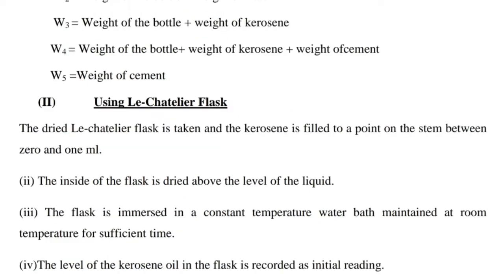Procedure using the Le Chatelier flask: The dried flask is taken and kerosene is filled to a point on the stem between 0 and 1 ml. Next, the inside of the flask is dried above the level of the liquid. Next, the flask is immersed in a constant temperature water bath maintained at room temperature for sufficient time. The level of the kerosene oil in the flask is recorded as the initial reading.